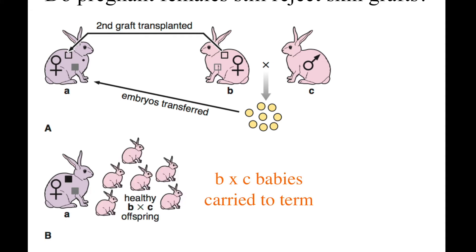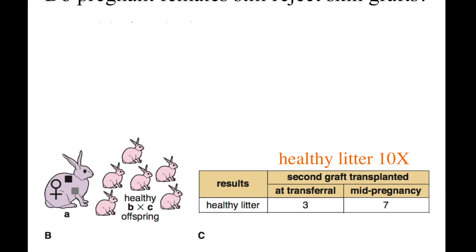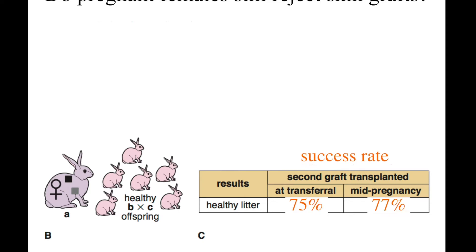The surrogate mother also carried the babies to term, so the allograft didn't interfere with the pregnancy. Ten different litters of rabbits were produced, and they did the second allograft to the pregnant mother at different times — either when the embryos were transferred or in the middle of her pregnancy. Either way, most of the time they had a healthy pregnancy.